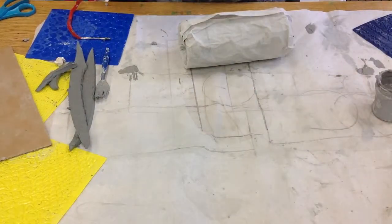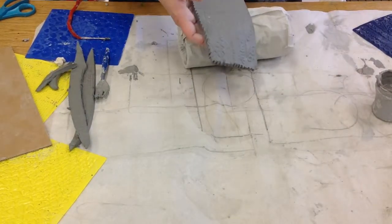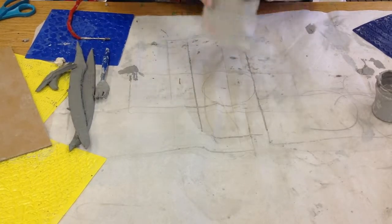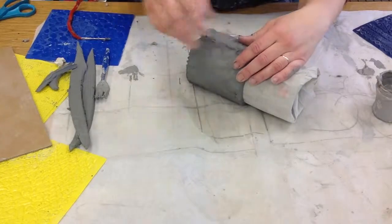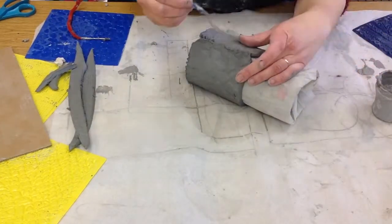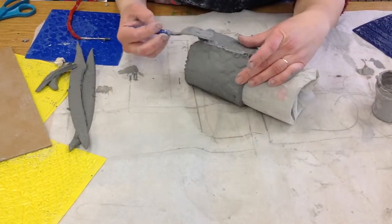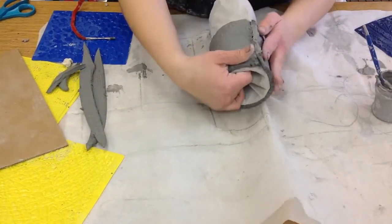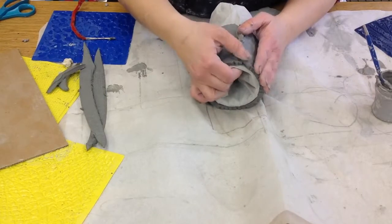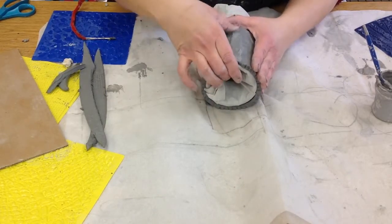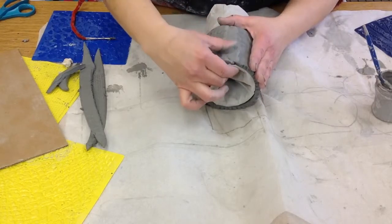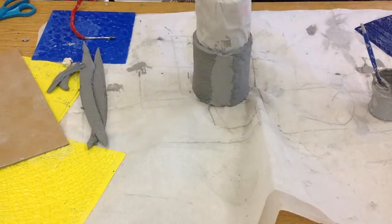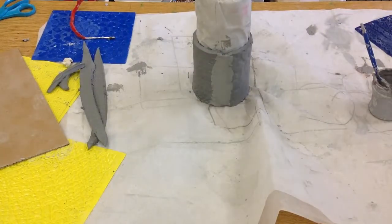Take our textured slab here and roll that on. Add a little slip on that seam. And gently push that together, like that. So I'll give this a look.